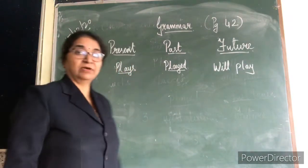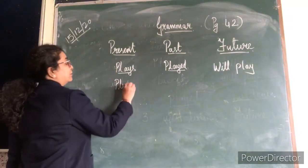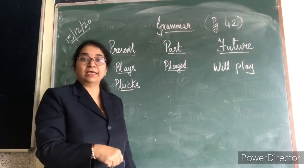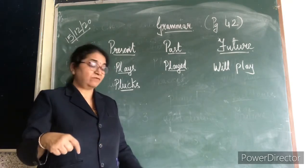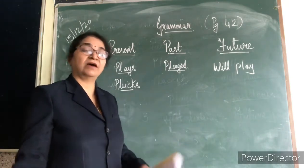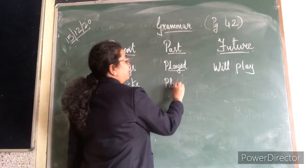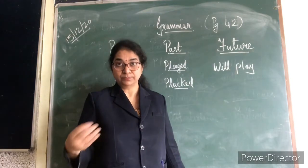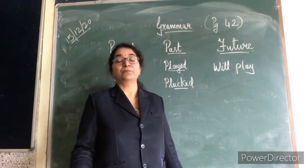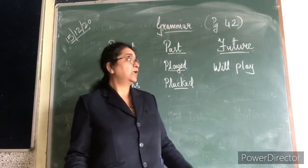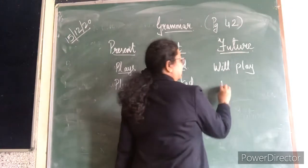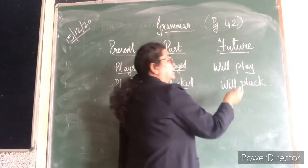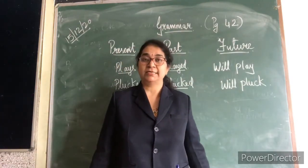Ravi plucks flowers — abhi todra hai, that is present. Ravi plucked the flowers — already plucked, that is past. And Ravi will pluck flowers — he is going to pluck flowers, baad mein todega, that is future.